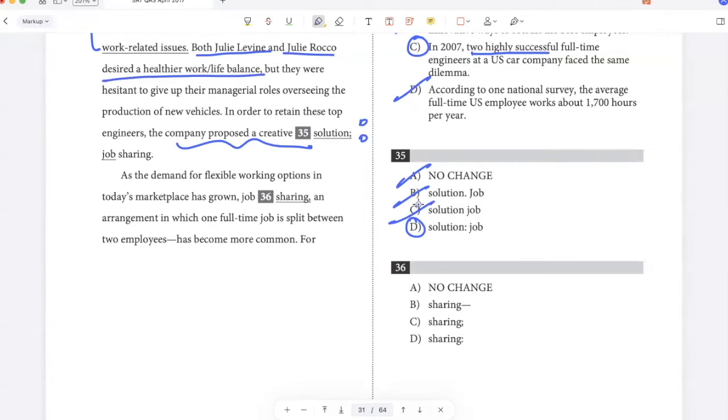As the demand for flexible working options in today's marketplace has grown, job sharing, an arrangement in which one full-time job is split between two employees has become more common. Now here, my main sentence is job sharing has become more common. And this is the definition: an arrangement in which one full-time job is split between two people. So when I have a definition like this, which is non-essential, then I need to put it between a pair of commas or a pair of dashes.